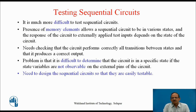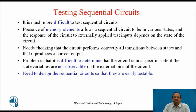In previous lectures, we have seen that combinational circuits can be tested using either deterministic test methods or random test methods. But it is somewhat difficult to test sequential circuits. The basic reason is that in sequential circuits, the presence of memory elements allows a sequential circuit to be in various states, and the response of the circuit to externally applied inputs depends on the state of the circuit. Therefore, there is a need for checking that the circuit performs correctly all transitions between states and also produces a correct output.